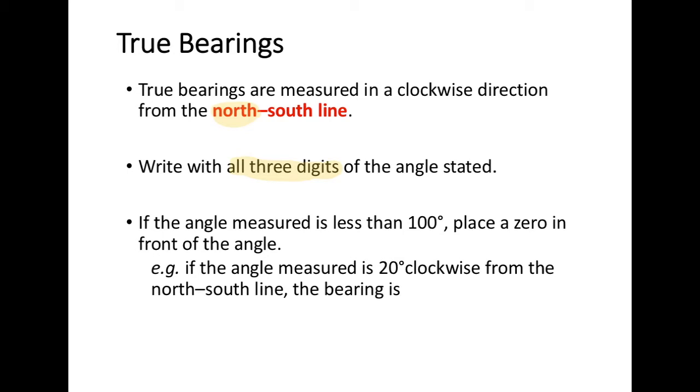For example, if the angle measured is 20 degrees clockwise from the north-south line, the bearing is written as 020, remembering to put the zero in front.